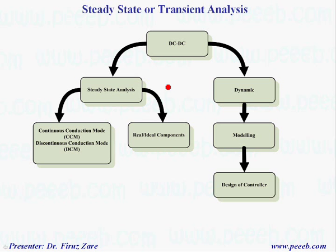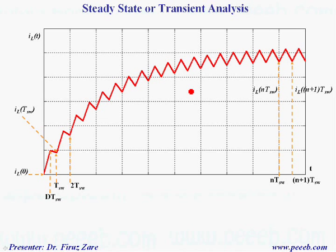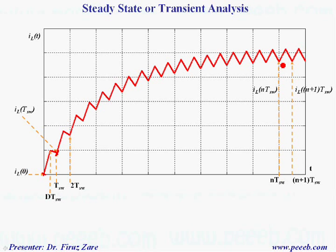In DC-DC converters, we can either analyze steady state or dynamic behavior. In steady state, it can be continuous conduction mode or discontinuous conduction mode, and we can consider real or ideal components. To analyze the dynamic performance of a system, we need to have a model of the system and then design a controller. A difference between steady state and transient is — for example, looking at current through an inductor — in transient the current at the beginning of each switching cycle is not equal to the current at the end of the switching cycle, meaning the current is increasing. In steady state, the current at the beginning of the switching cycle equals the current at the end, and we can find the conversion ratio based on the duty cycle.